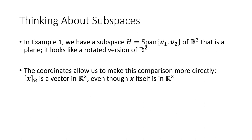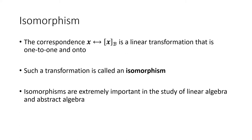To recap: if we call H the span of v1 and v2, that's a subspace of R3. But because it has two basis vectors, it looks like R2 — it's a plane in R3, a rotated version of R2 living inside R3. The coordinates allow us to make that comparison more directly: we can tell how x is constructed from the basis, how x relates to those two basis vectors. So even though x is a vector in R3, the coordinates of x are a vector in R2. This connection between actual vectors and coordinate vectors is a linear transformation that is one-to-one and onto — called an isomorphism — which is a very important concept in linear algebra and abstract algebra.